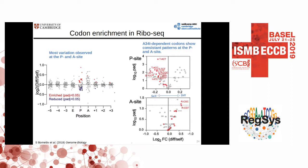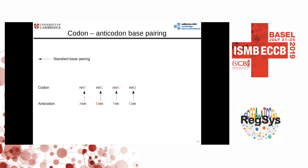We noticed that in this group of codons that become less frequent after differentiation, a lot of them rely on the same adenine-to-inosine modification. This is shown for the P-site, where we have colored all those codons that rely on this adenine-to-inosine modification in red to show that all of them go in the same direction — decrease — and the A-site is showing the opposite pattern.